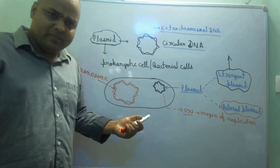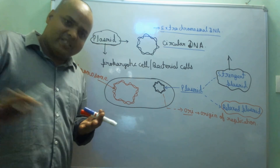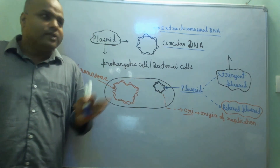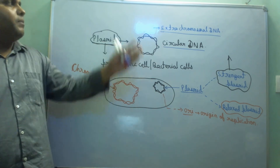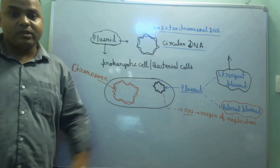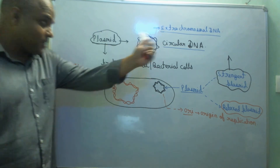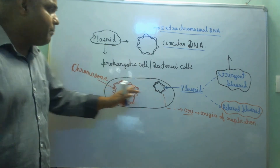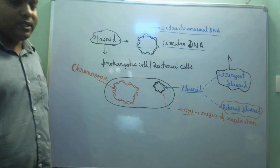If this plasmid is absent, that is also no problem — bacteria will survive its life smoothly. So plasmid is not essential for survival. But if it is present, the bacteria will show some extra features. It is extra-chromosomal DNA, separate from the main chromosome of the bacteria.